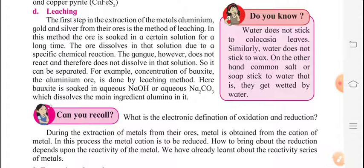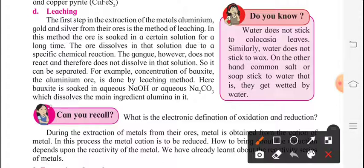We have to dissolve whatever ore part is there into a chemical solution. The gangue particles are not going to dissolve in it and they are going to get separated out. This is the example for leaching.